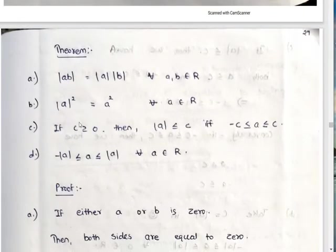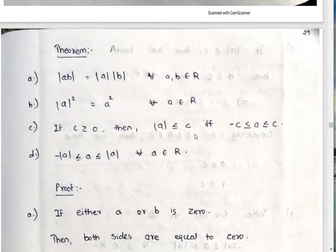Theorem: mod AB equals mod A into mod B for all A, B element of R. Mod A squared is equal to A squared for all A element of R. If C greater than 0, then mod A less than C if and only if minus C less than A less than C. And minus mod A less than or equal to A less than or equal to mod A for all A element of R.